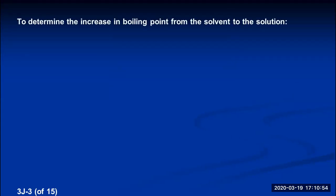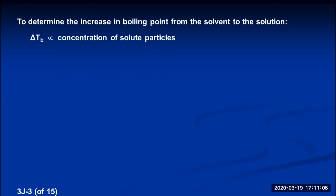We're going to try to quantitatively determine how to calculate the increase in boiling point from a solvent to a solution. It turns out it's a colligative property. The change in the boiling point, abbreviated delta T sub b, is proportional to the concentration of the solute particles in the solution. The more solute particles there are, the bigger the change in the boiling point. This is a proportionality equation, so we replace the proportionality sign with an equal sign and a constant. The change in the boiling point equals a constant multiplied by some way to measure the concentration of the solute particles.